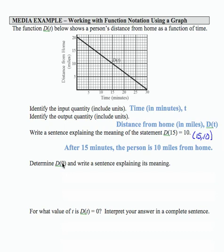Determine d of 0 and write a sentence explaining its meaning. So d of 0, well, when the input is 0, if we look at the graph, the output is 20. So let's see if we can understand the meaning behind that information.